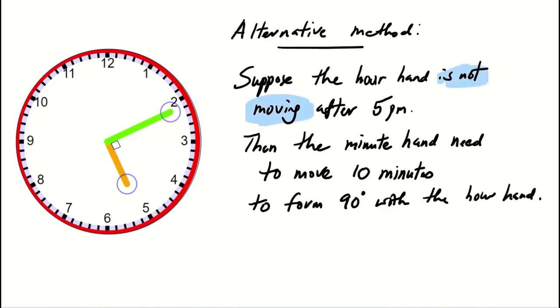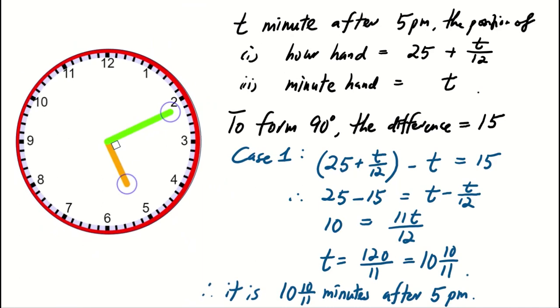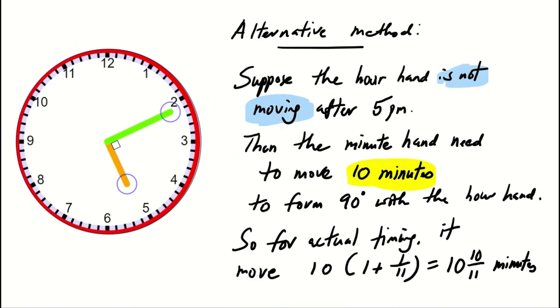Although this assumption isn't accurate, it simplifies our calculation to 10 × (1 + 1/11), giving the same result of 10 and 10/11 minutes. This approach is successful and effective.